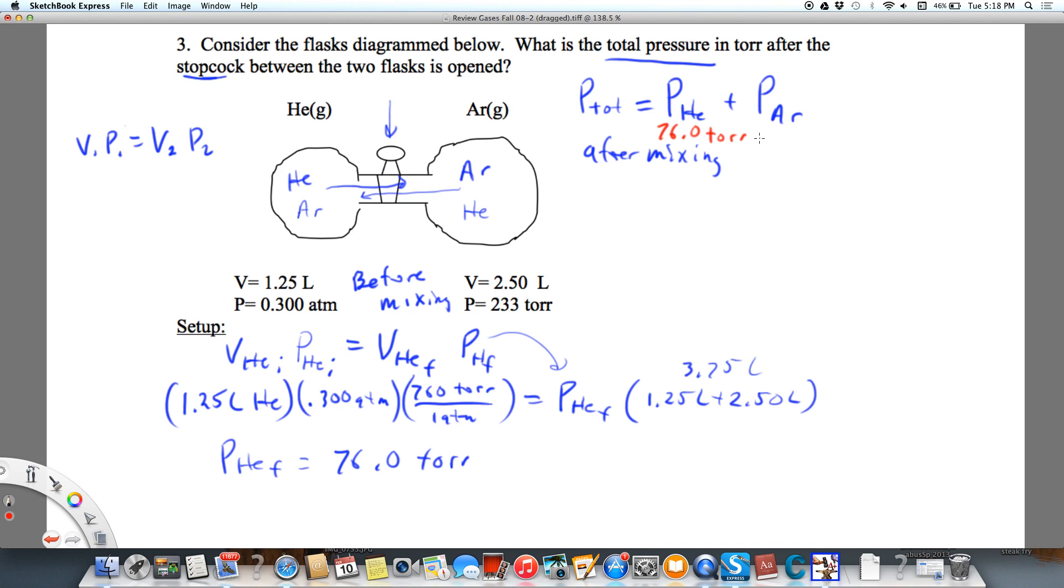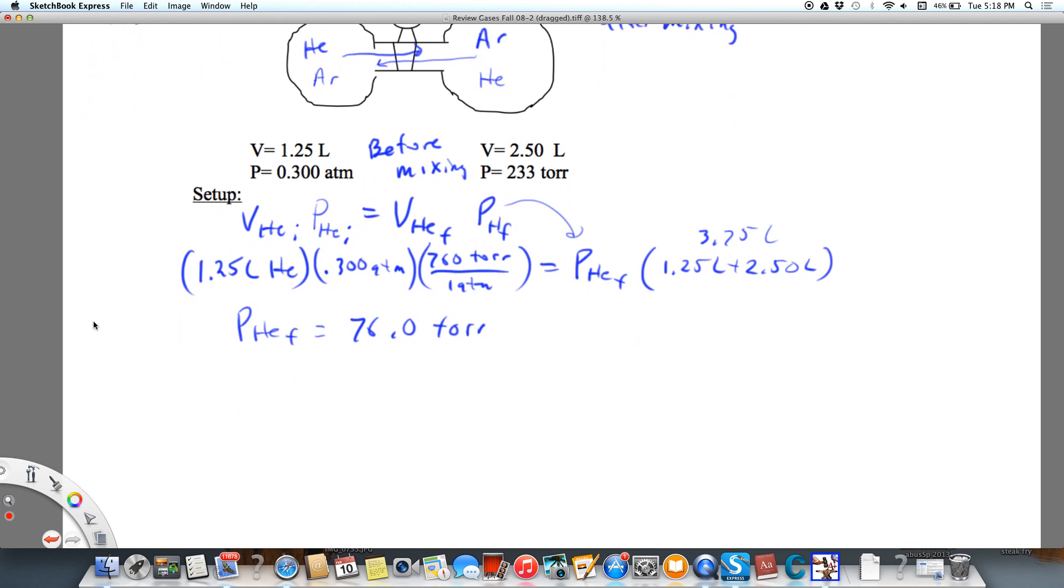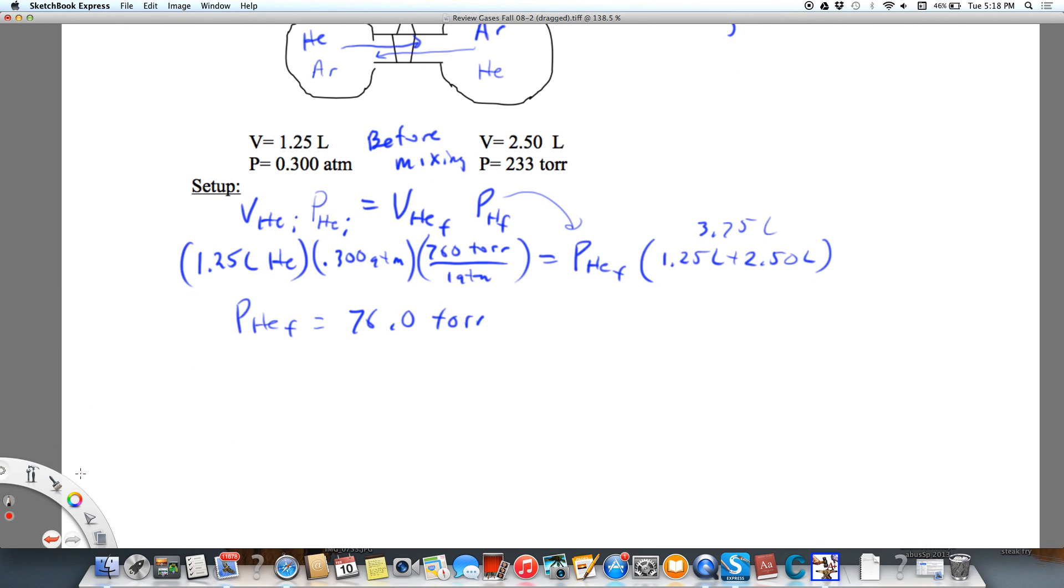Now we're going to do the same thing for argon. We know that the volume of argon initial times the pressure of argon initial equals the volume of argon final. That's going to be 3.75 because now argon's coming over to this side and filling the whole thing times the pressure of argon final.